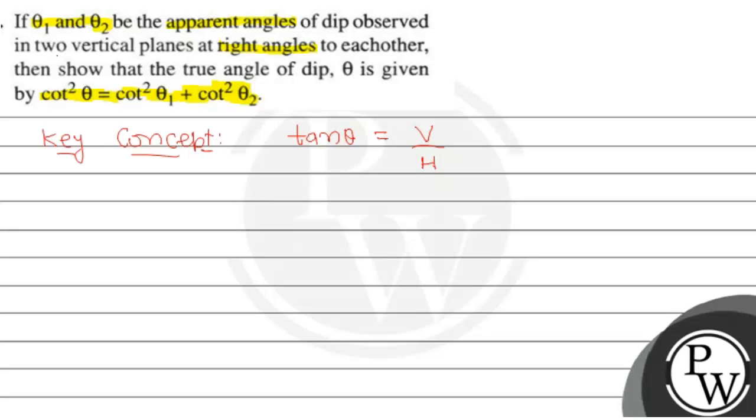tan θ₁, if declination angle is equal to alpha, so theta 1 will be V upon H cos alpha, and tan θ₂ will be equal to V upon H sin alpha.